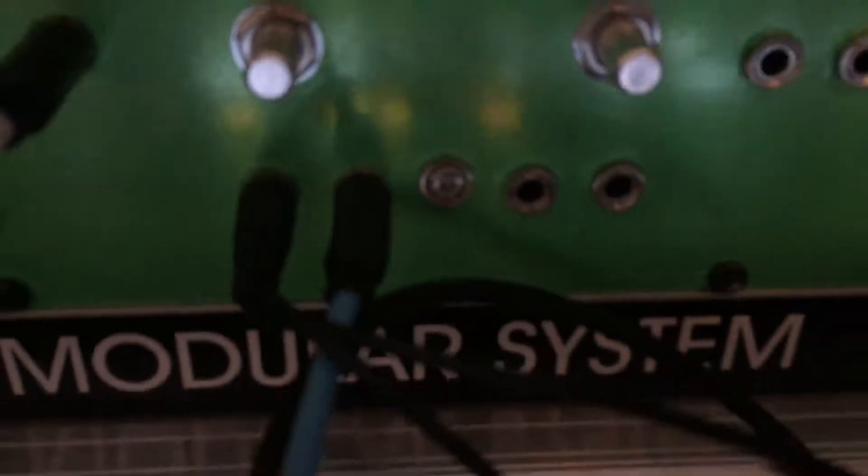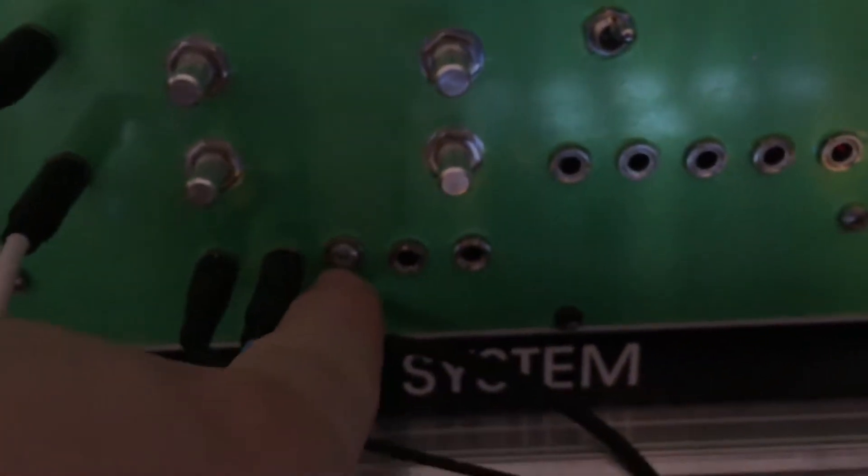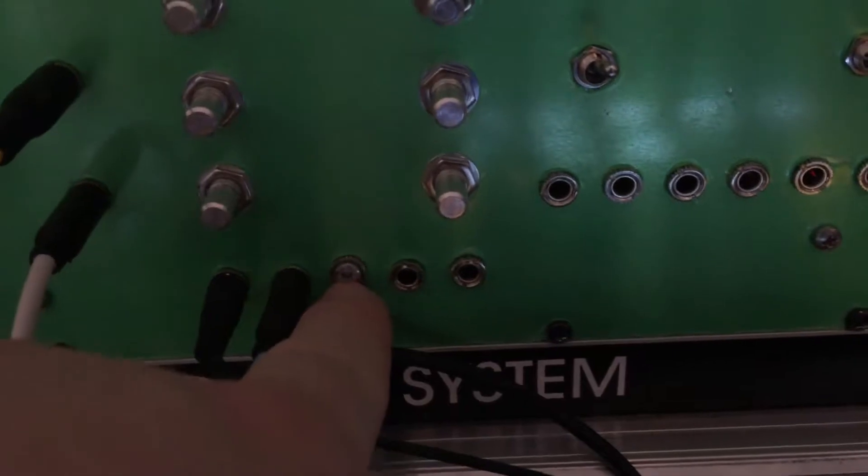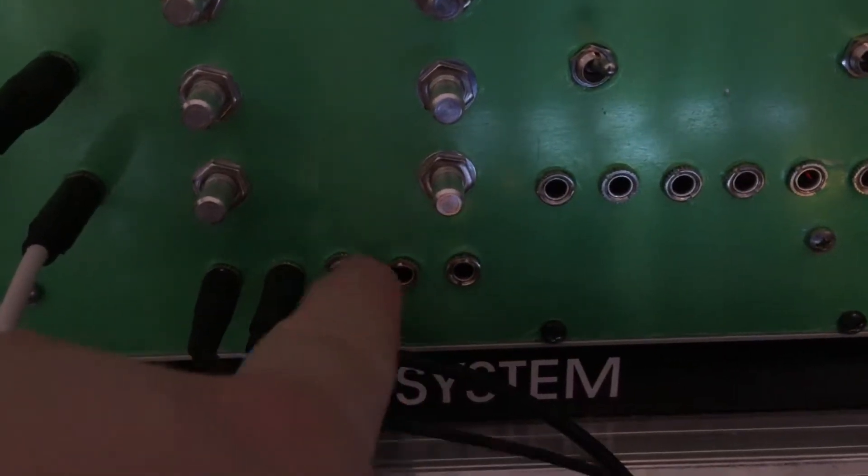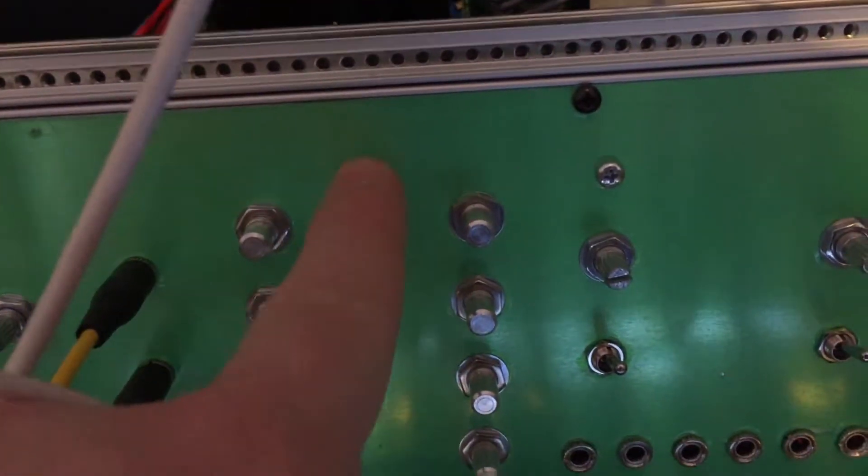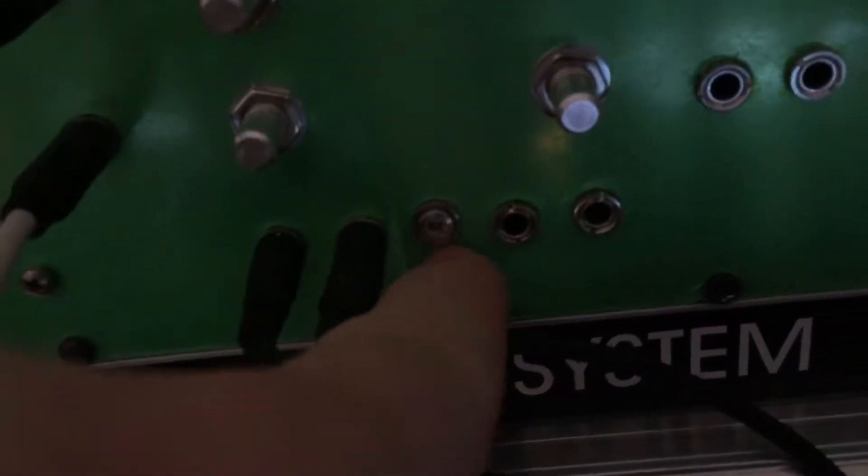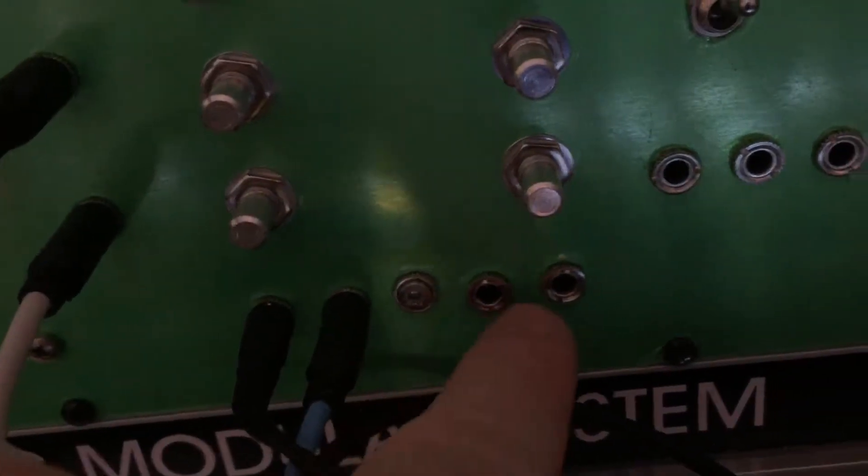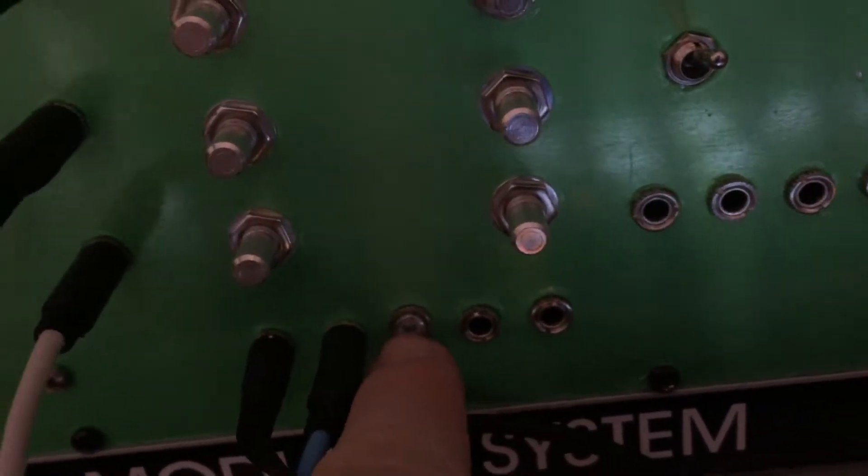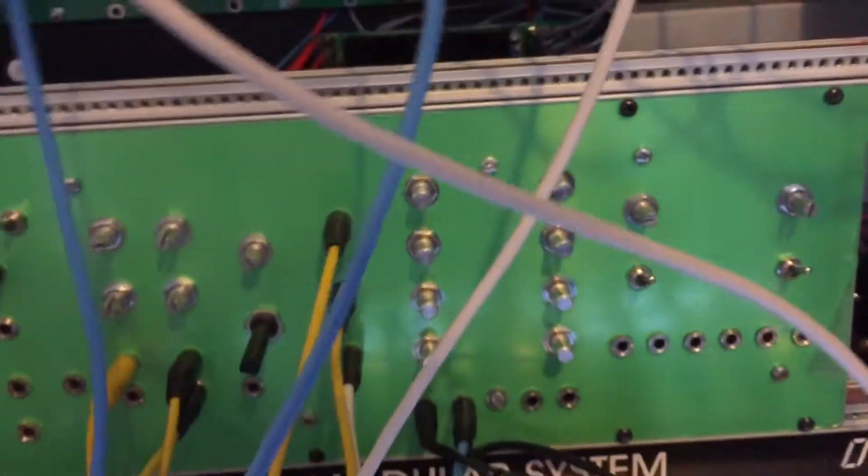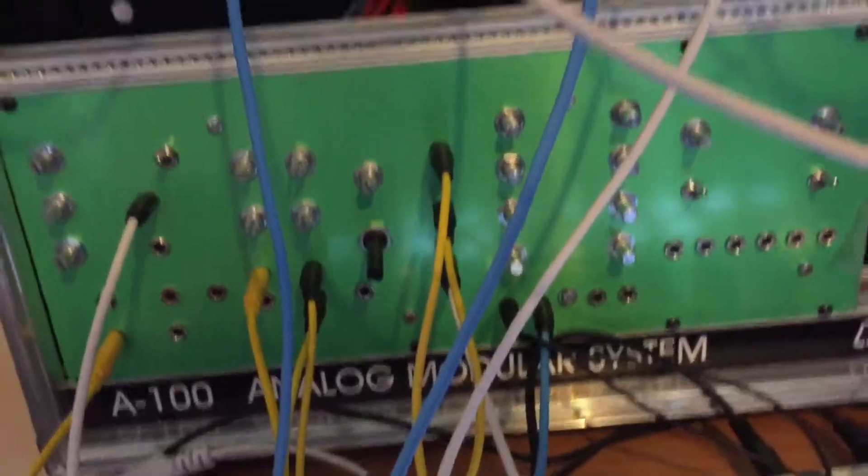There was one slight problem with this hole here. Matt had accidentally drilled this one the same size as the jack holes rather than the smaller M3 holes for the screws for mounting the boards. However, I found that just putting a nut which is used to secure the jacks around the screw actually meant that it still fit in the hole, so it's not actually too intrusive.